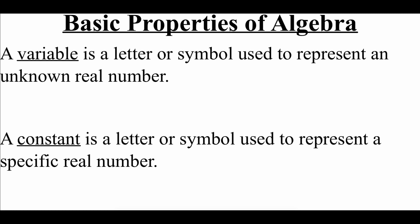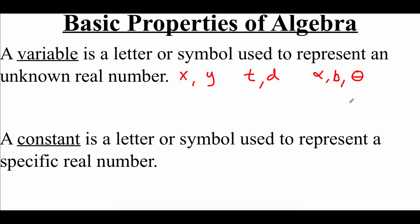In algebra, a variable is a letter or a symbol that we can use to represent an unknown real number. A lot of times you'll see x or y being used as a variable. We can use letters that actually mean something in the context of a problem — so you might see t used for time or temperature, or d for distance. When you get to trig, we'll typically use Greek letters like alpha, beta, or theta.